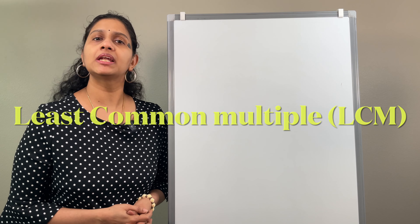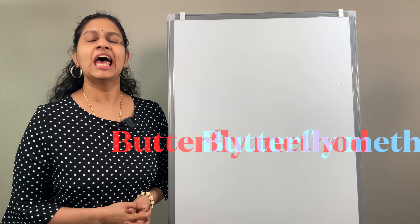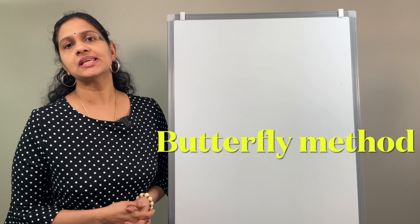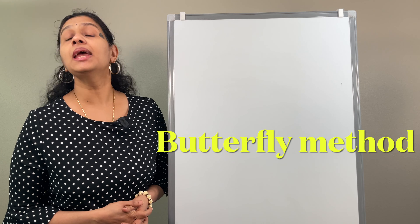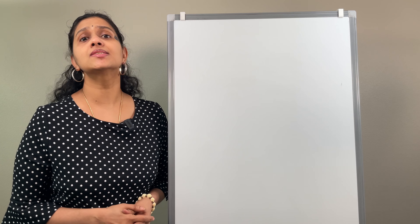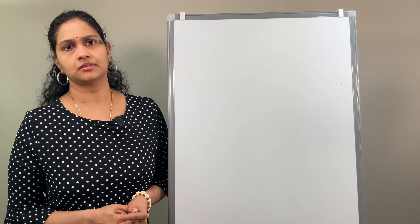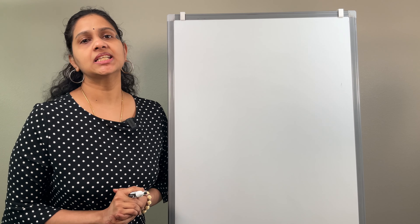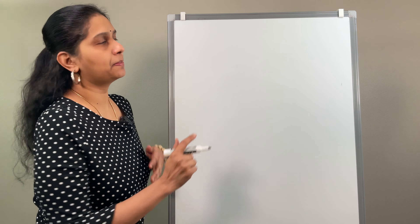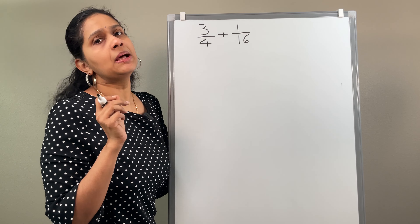Hi all, welcome to Math EC. In today's video, we will be discussing adding fractions with unlike denominators. There are basically two ways of doing it: one is by using the LCM method, the least common multiple method, and the other one is by using the butterfly method. Now let us first see what is the LCM method, that is the least common multiple method.